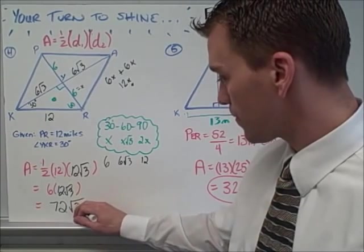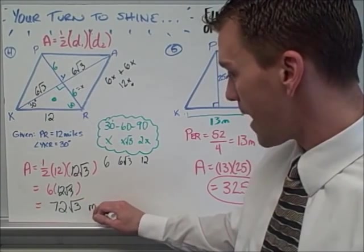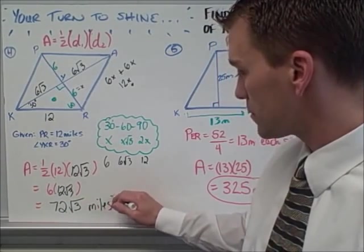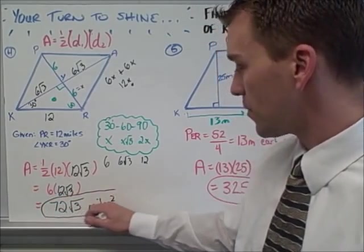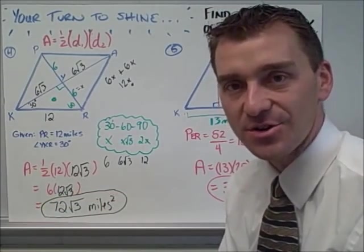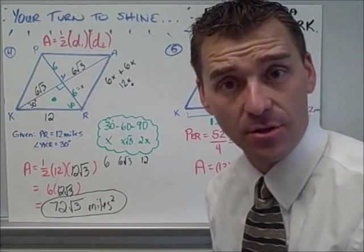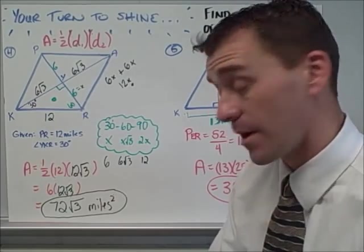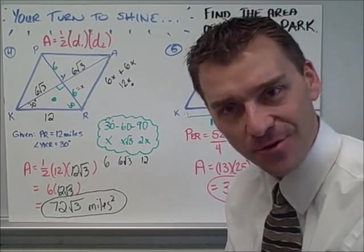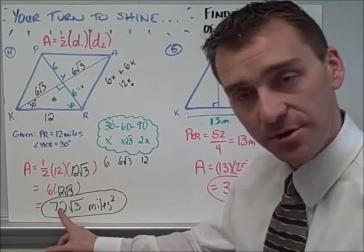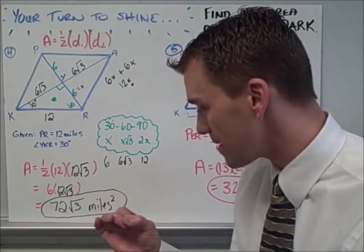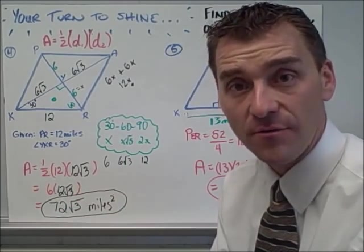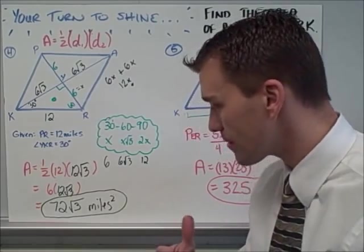Now, here's something cool. If the directions here said to round it to the nearest tenth, like on a PSSA or any other type of question, or SAT, then you have to go further and take 72 in your calculator and take that times the decimal equivalent of root 3. And that will give you your actual decimal.